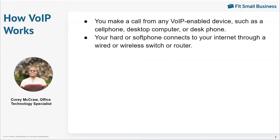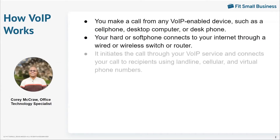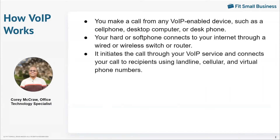Once your call is initiated, the connection is made through either your office Internet service or through your wireless carrier. While some services do require you to have a carrier set up, many will work through a Wi-Fi or Internet-wired signal. VoIP isn't just Internet-to-Internet — the person receiving your call can be on a landline, cellular, or Internet-based connection. You can reach out to them if they are using a virtual phone number through a VoIP carrier.